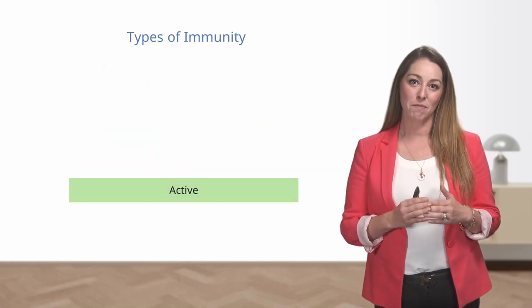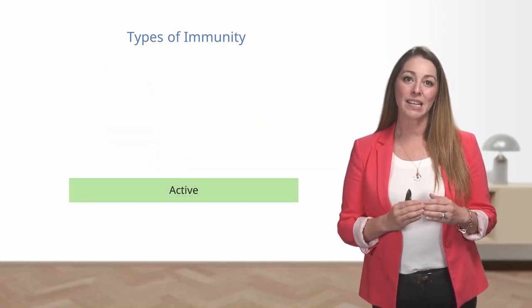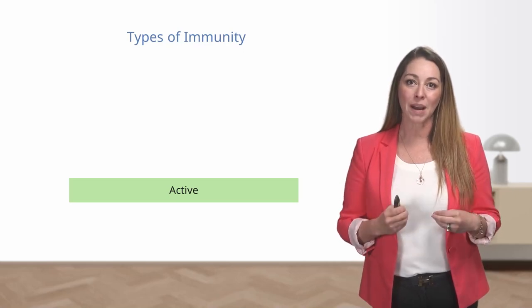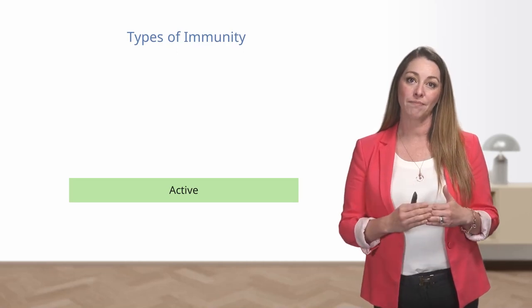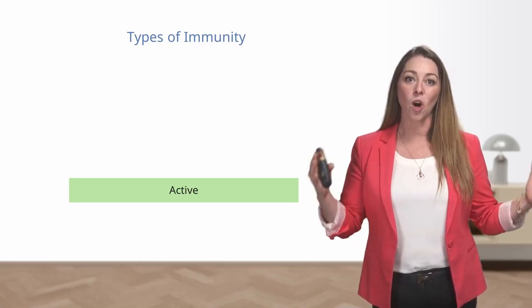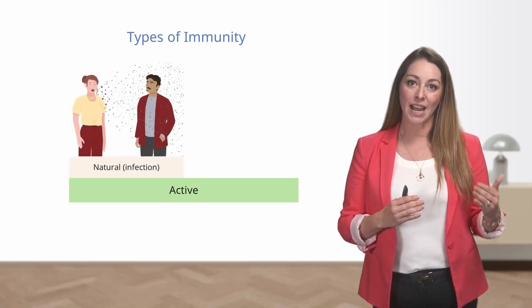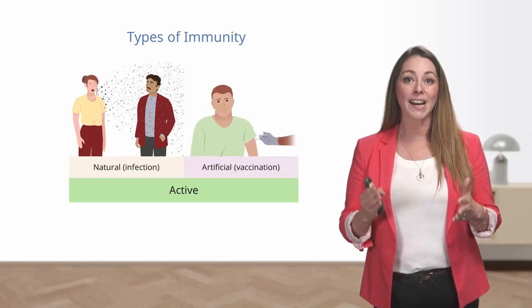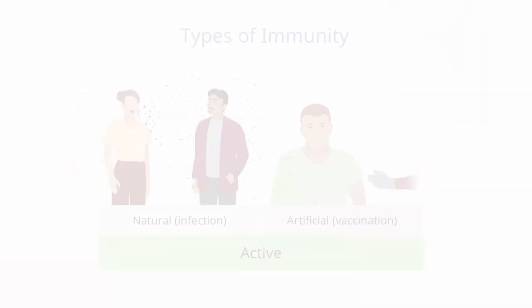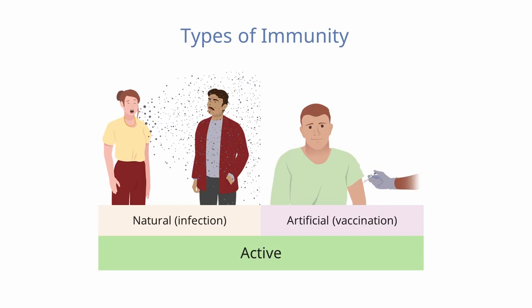The second type of immunity is active immunity. Active immunity is a result of production of antibodies in our immune system as a result of exposure to an infectious agent. Active immunity is long-term immunity. It can be acquired either naturally through infection with the actual disease, or artificially through vaccination against the disease. Either way, this type of immunity occurs as a result of exposure to a disease organism, which triggers the immune system to produce antibodies to that disease both in the moment and in the future.